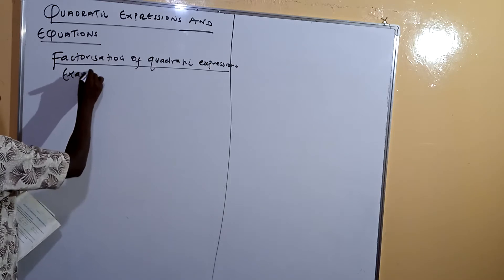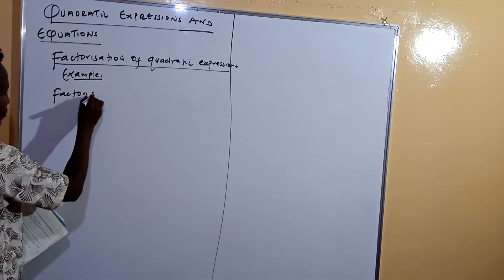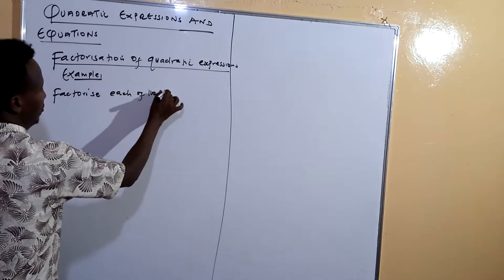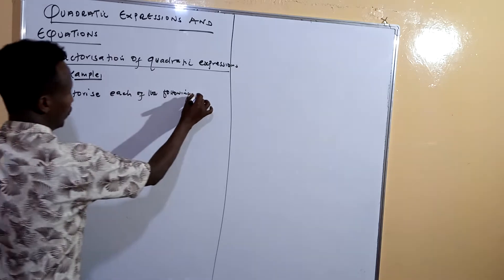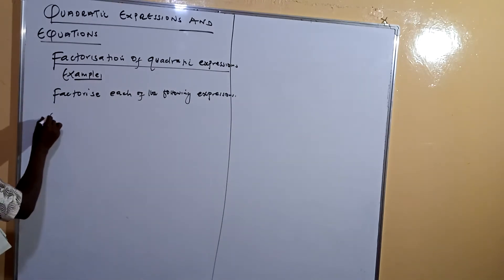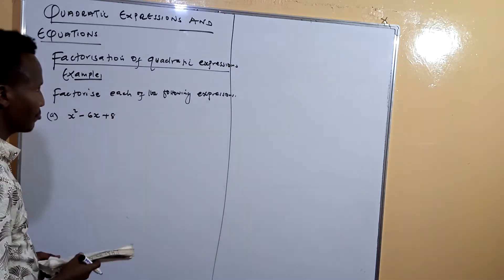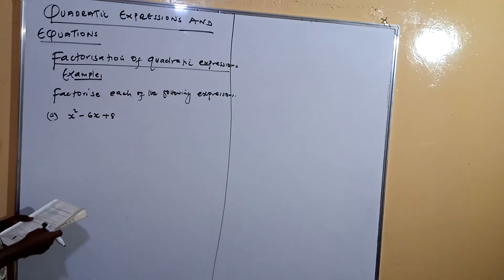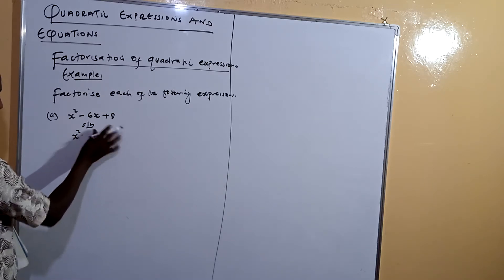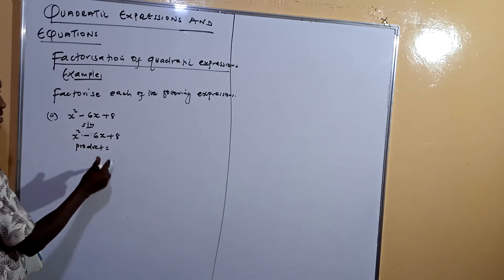Example one: factorize each of the following expressions. The first one is x squared minus 6x plus 8. Remember, when we come to the solution, we say x squared minus 6x plus 8.